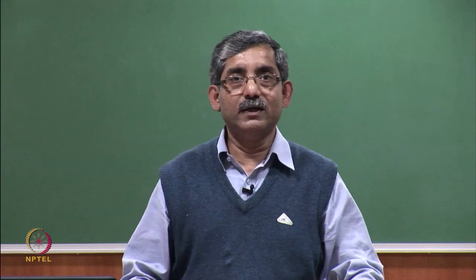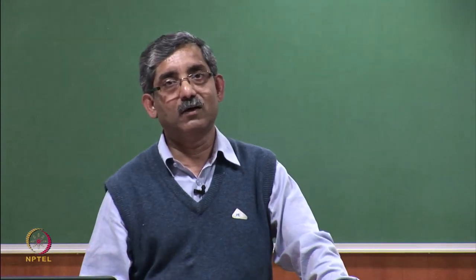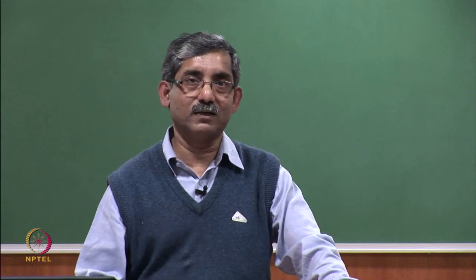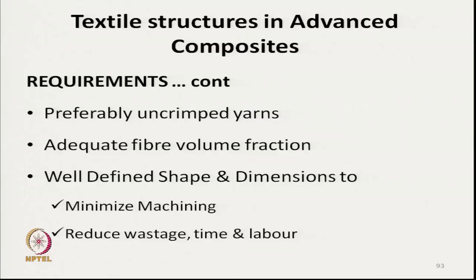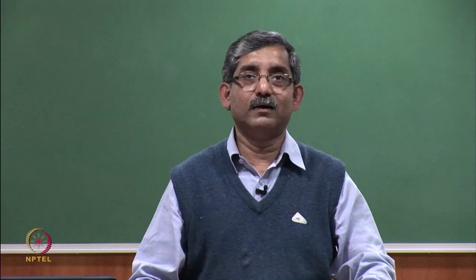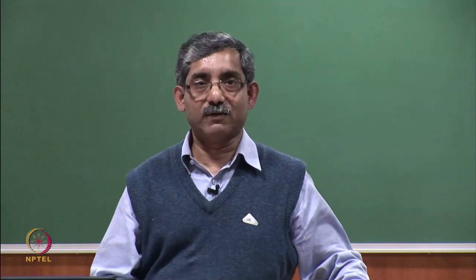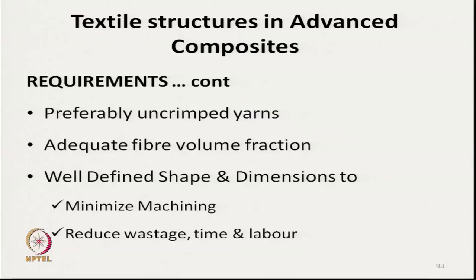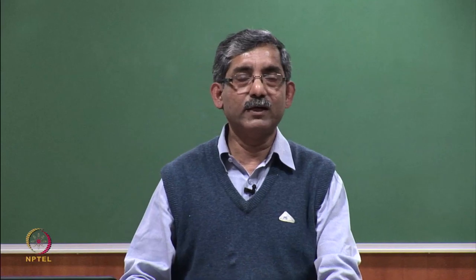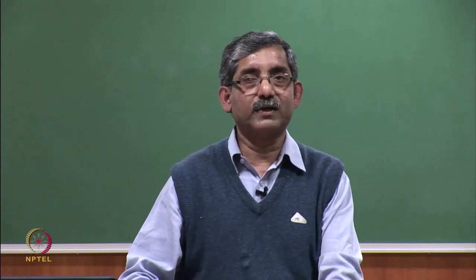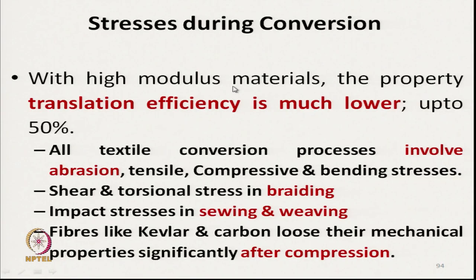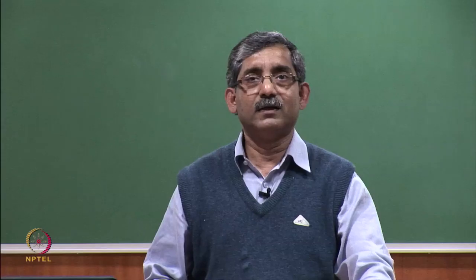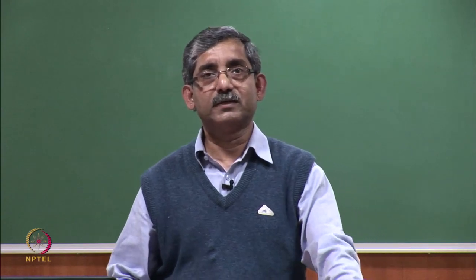For example, if we need a structure of circular cross section — a circular shape composite — it is better to have a preform in circular shape; otherwise there will be wastage of material, and to get the proper shape we need machining. So well-defined shape and dimensions of the textile structure is required.